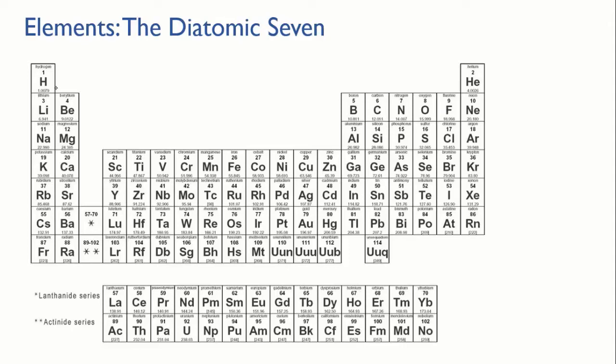And they are hydrogen, nitrogen, oxygen, fluorine, chlorine, bromine, and iodine. All of these seven are diatomic when you encounter them in the real world.